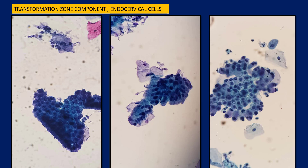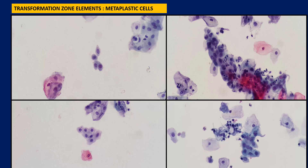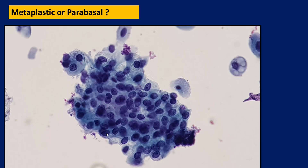The transformation zone component — here are some views of endocervical cells, and you will see a lot more of this in the lecture on glandular lesions. These are benign endocervical cells. These are some examples of metaplastic cells, which can have a wide range of appearances, especially when showing reparative and reactive changes. These metaplastic cells have angulated outlines. In atrophic smears, there are sometimes cells where you are not very sure whether they are metaplastic or parabasal. In those situations, just make a note saying that some cells are present but you are not certain whether they are metaplastic or parabasal.